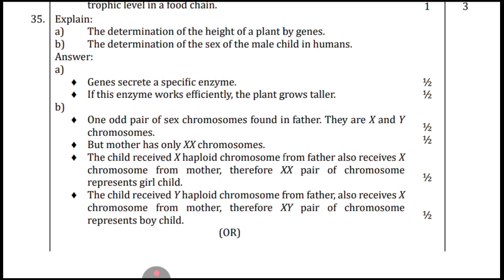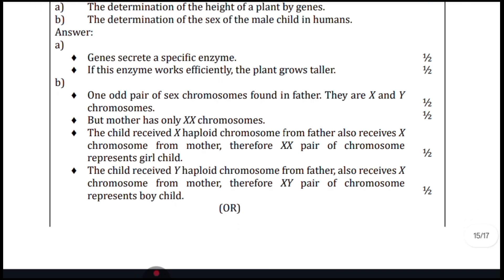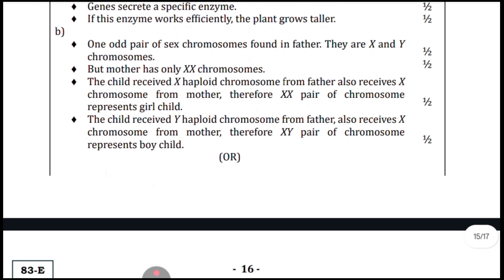Question thirty-five: explain the determination of height of a pea plant by genes and the determination of the sex of a male child in humans. The question specifically asks about the male child, so focus your answer on the male child. If you want to write for both, you may. Here are the points.